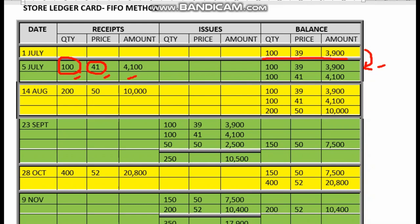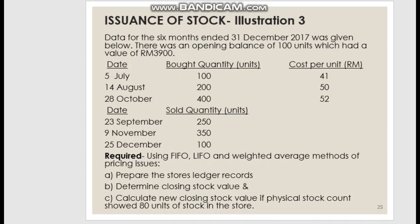The 5th July purchase is transferred and added to the balance column. Next, after July, we move on to August. On 14th August, we purchased again — still on the receipts side — at a cost of 50 ringgit per unit.